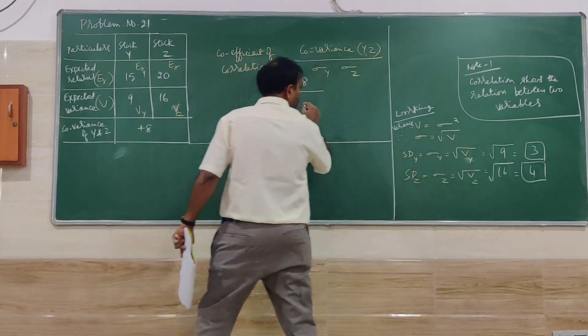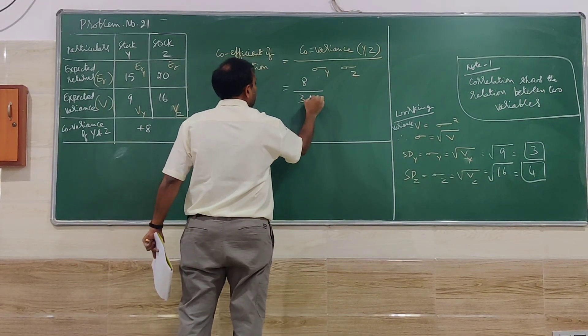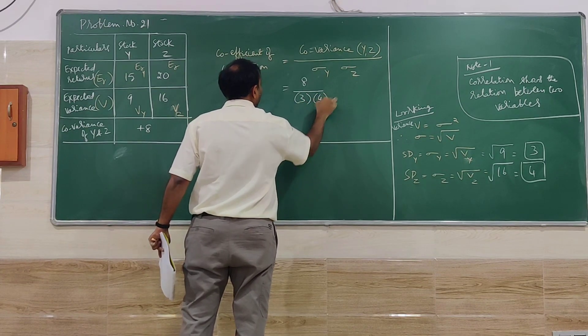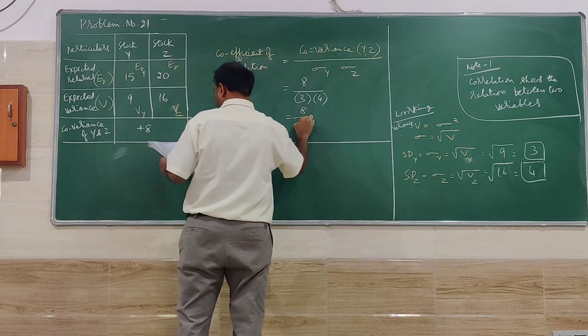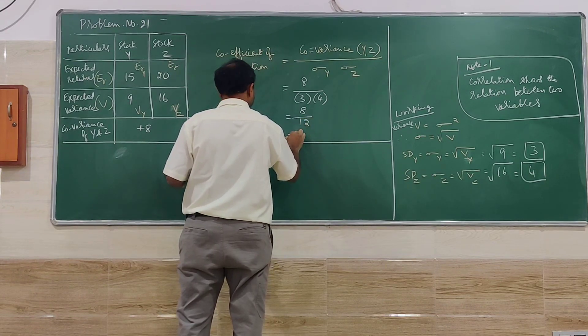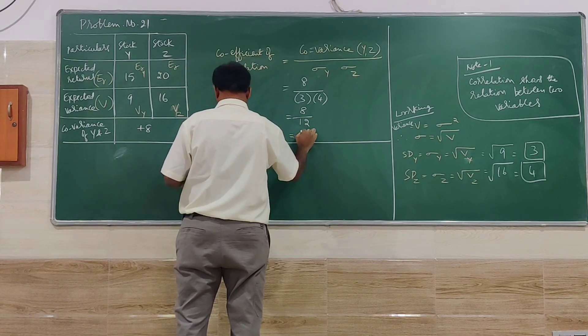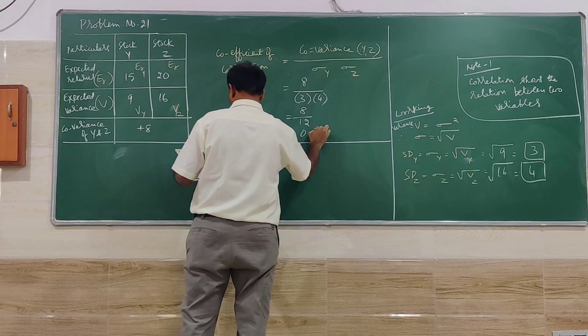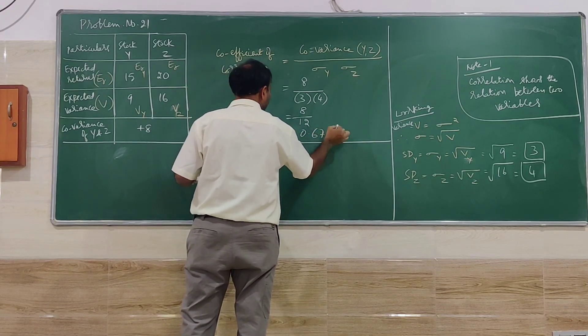So I will go for my substitution here, 3 and 4. So 8 divided by 12, that is going to be 0.666 recurring.